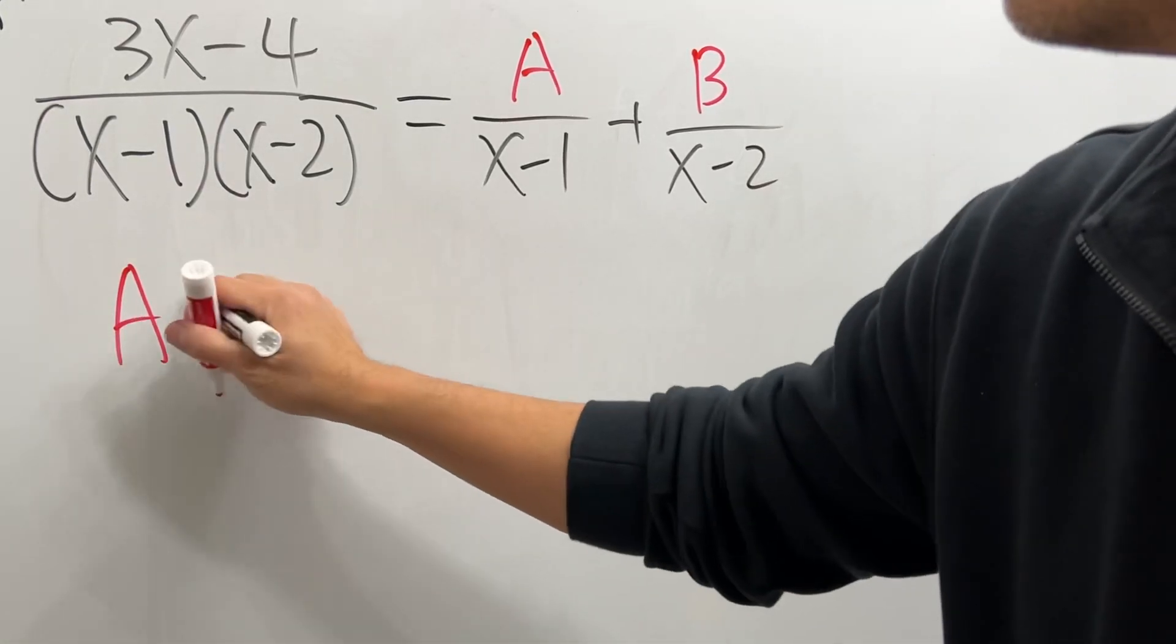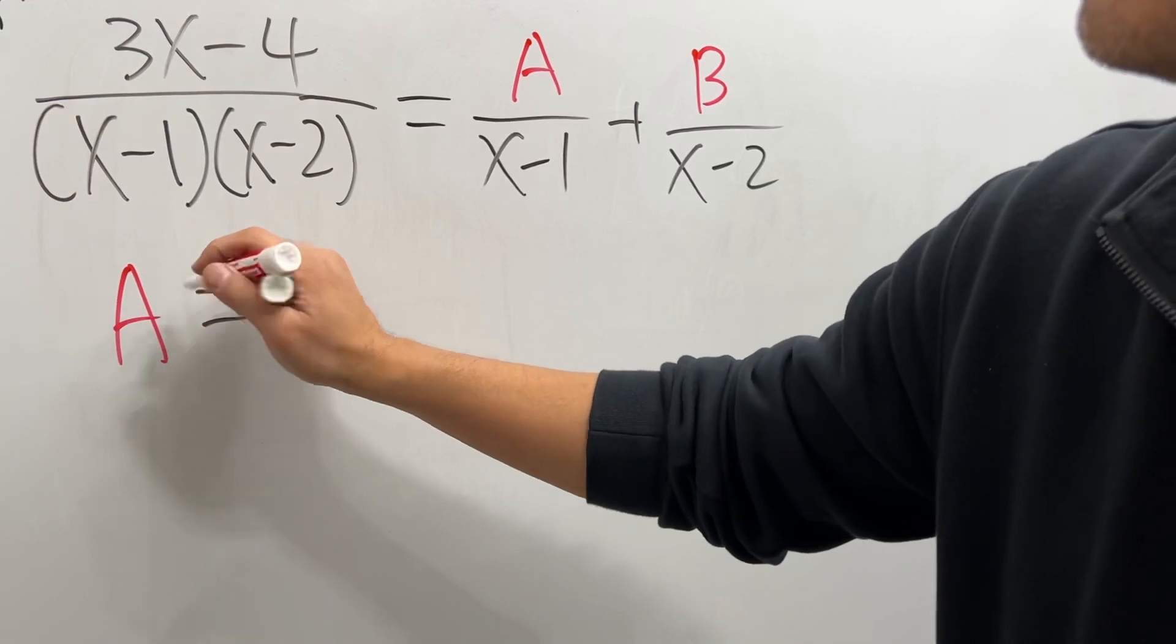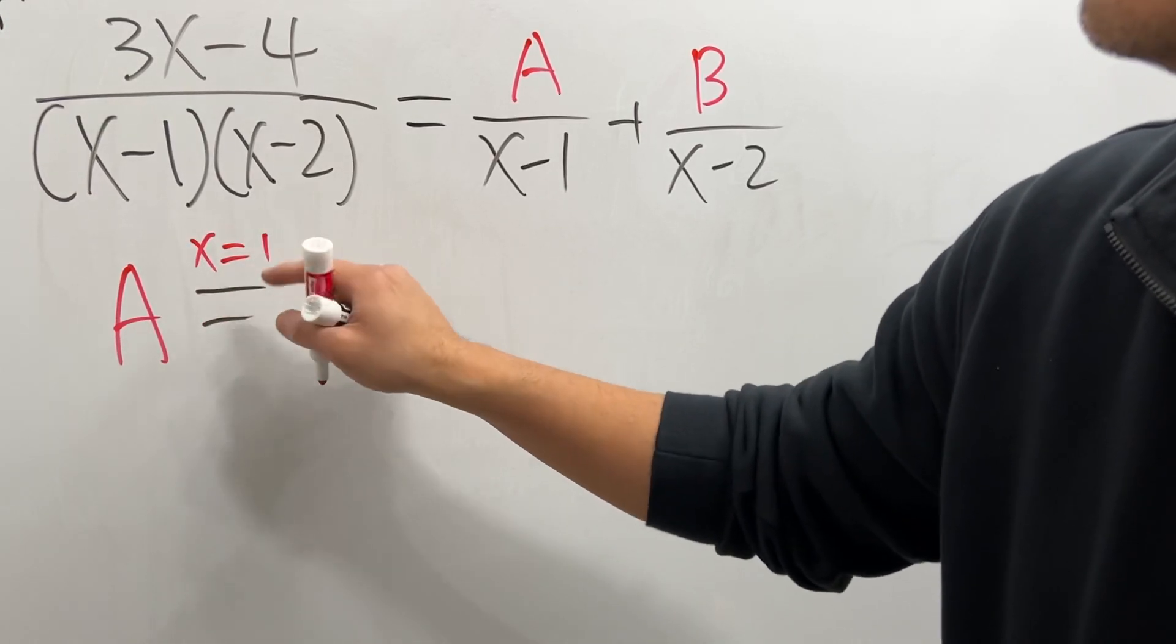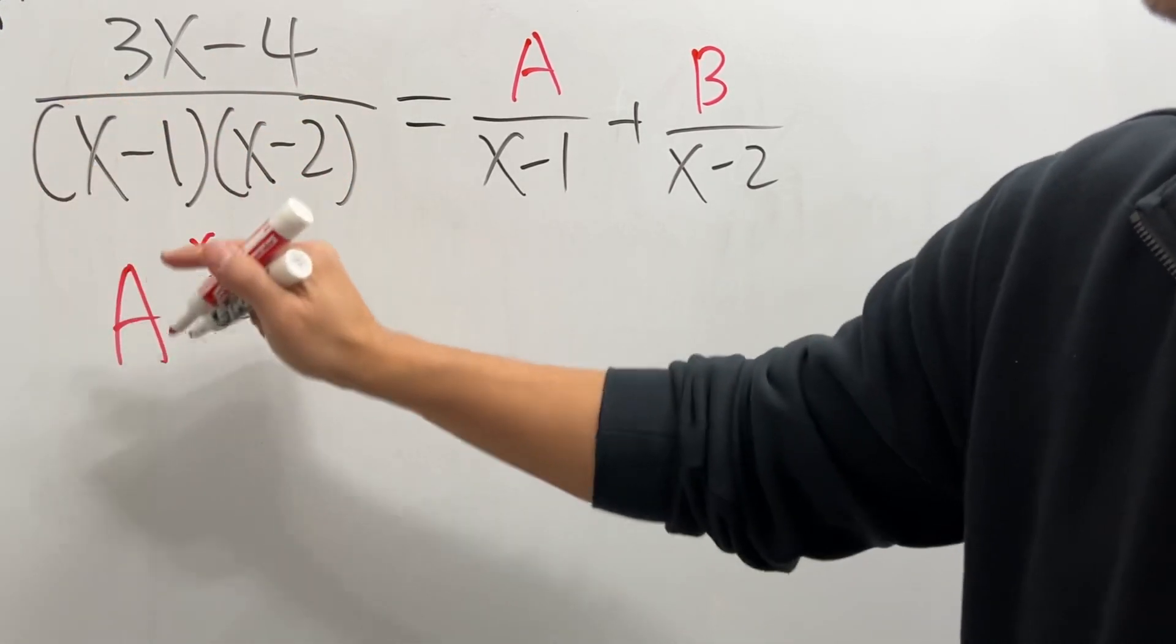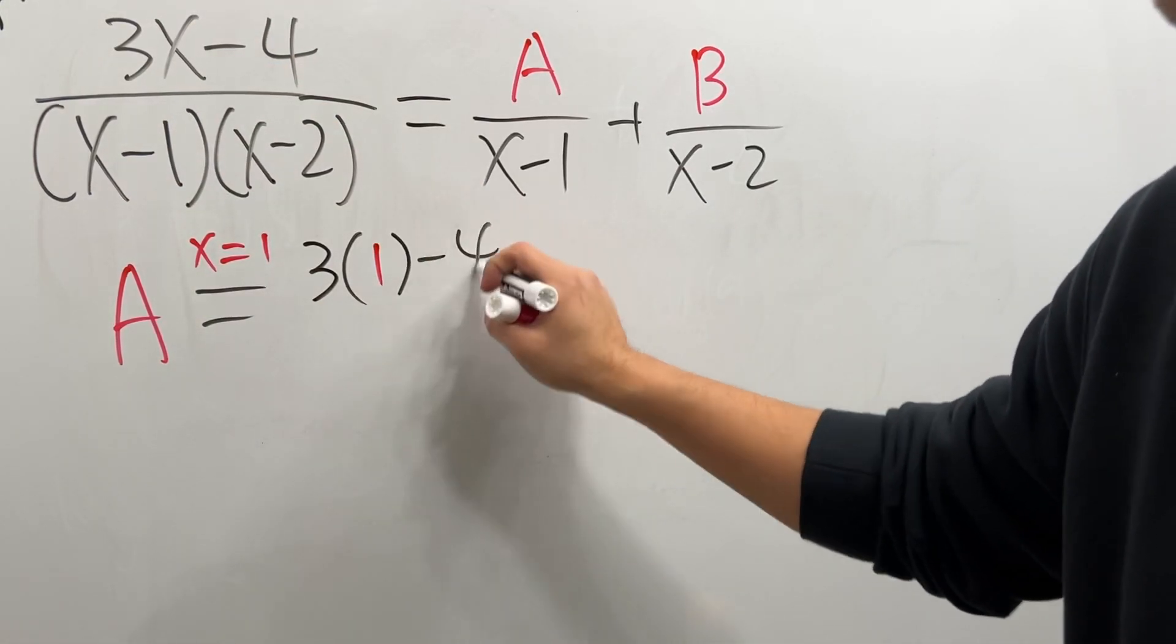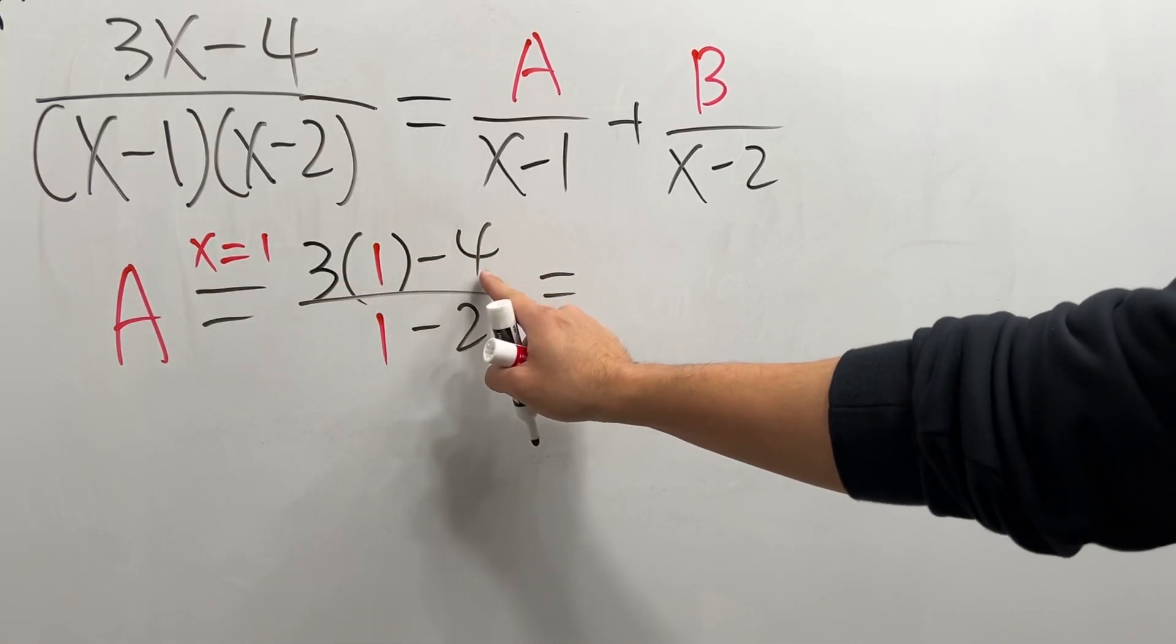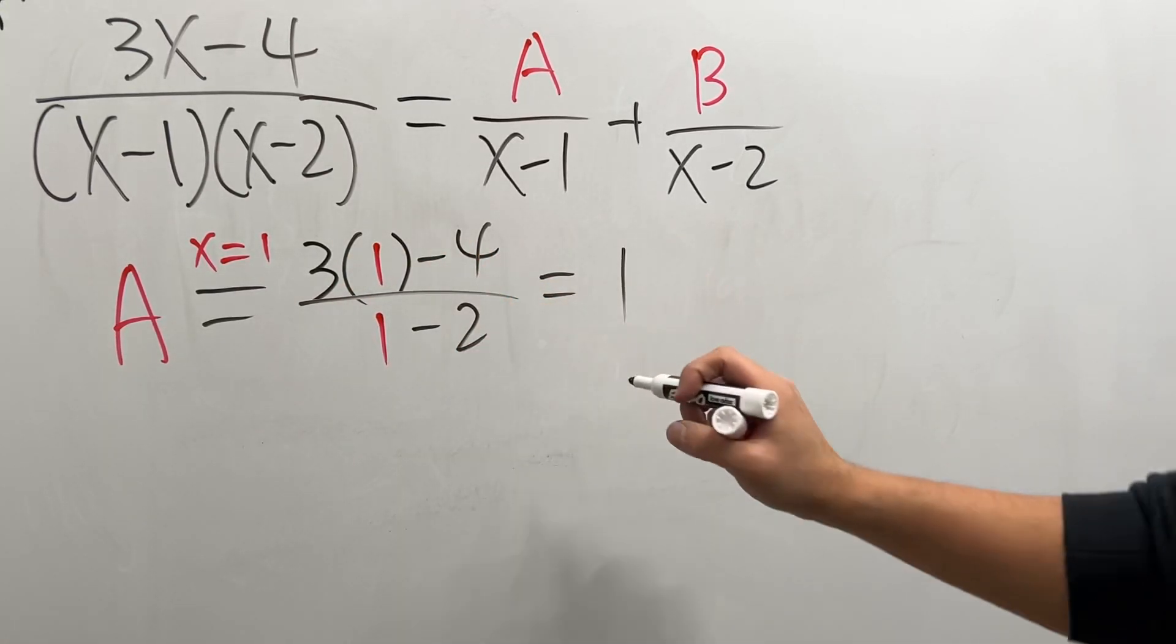For A right here, we are going to choose x equals 1. We are doing the cover-up method. So put x equals 1 right here into this x and that x, do not do that right here. So we have 3 times 1 minus 4 over 1 minus 2. That is negative 1, that is negative 1, so A is equal to 1.